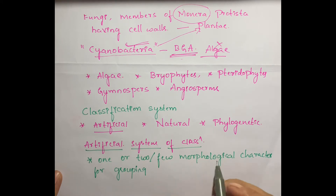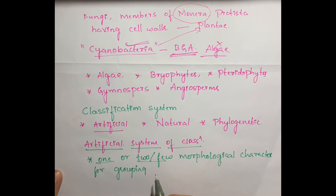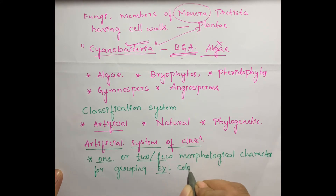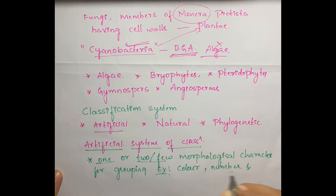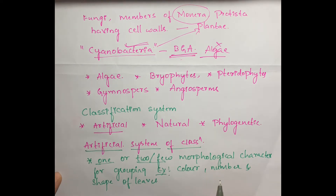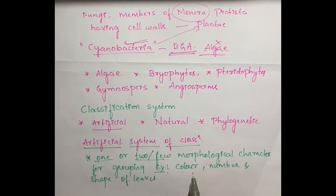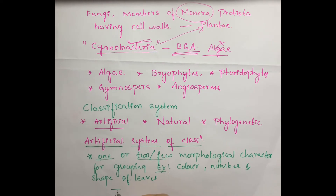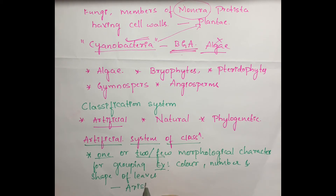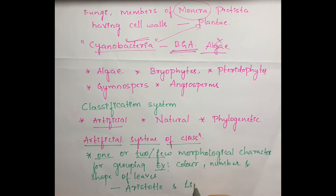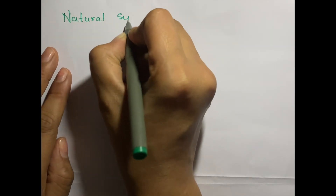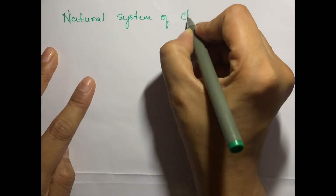It involves one or few morphological characteristics for grouping. Examples of such characteristics are color, number, and shape of leaves. Such simple characteristics are chosen in the artificial system of classification. This system is based on the proposals and characteristics given by Aristotle and Linnaeus.